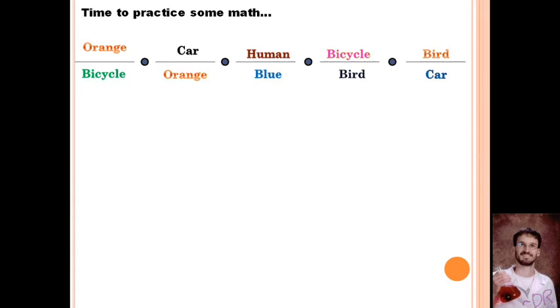This is what a lot of the math problems we're going to do in physics are probably going to look like to you because they're just going to be like words in fractions. But you use all of your math knowledge to answer it. We have orange over bicycle times car over orange times human over blue times bicycle over bird times bird over car. What would this math problem equal? What you need to do is cancel out things that are in the numerator and the denominator and see what you're left with. The answer to this math problem is human divided by blue.